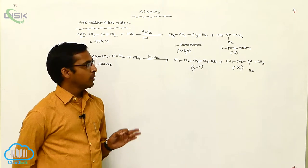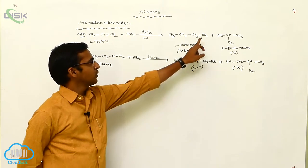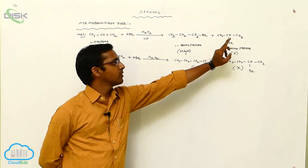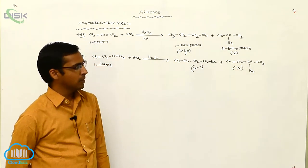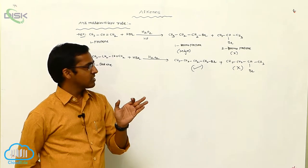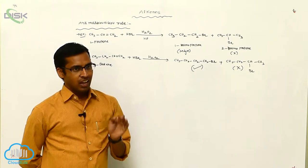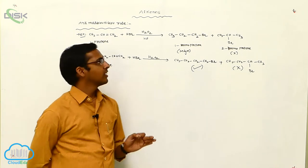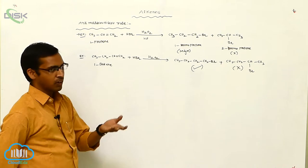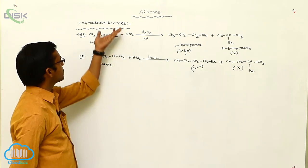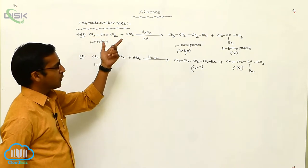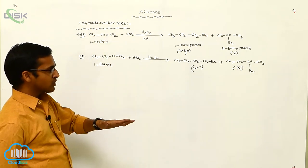Markovnikov rule means the negative charge is attached to the atom with less number of hydrogens. More substituted alkene follows Markovnikov rule, while less substituted alkene — having more number of hydrogens — is called anti-Markovnikov rule. Markovnikov rule corresponds to less number of hydrogens and more substitution.